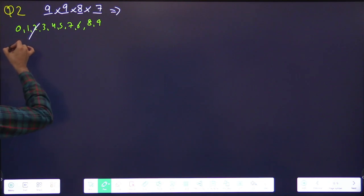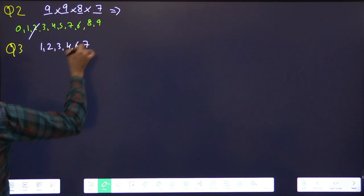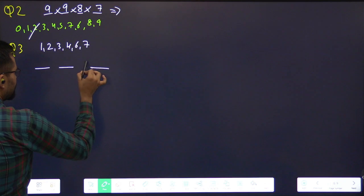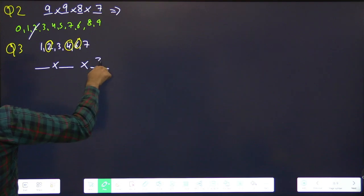Digits are 1, 2, 3, 4, 6, 7. Right? Three digits, even number: 1, 2, 3. Tell me, what should I do? Last digit, what options? What concept? Two, four, six.